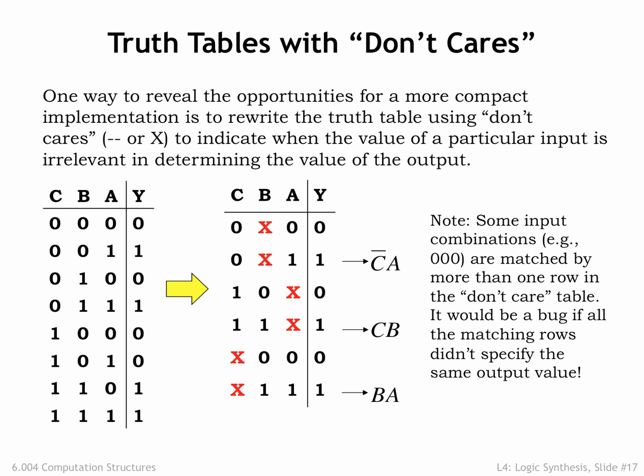The truth table with don't-cares has only three rows where the output is 1, and in fact the last row is redundant in the sense that the input combinations it matches are covered by the second and fourth rows. The product terms derived from rows 2 and 4 are exactly the product terms we found by applying the reduction identity.